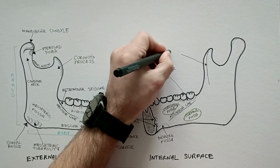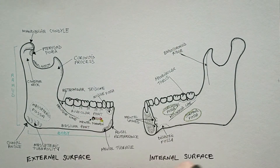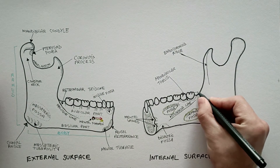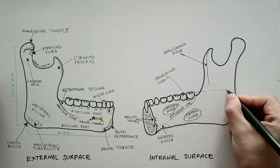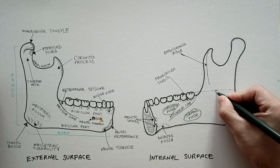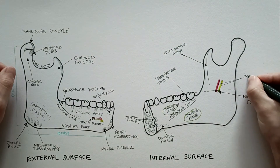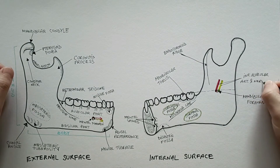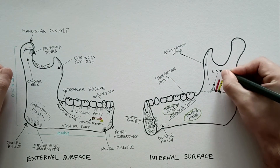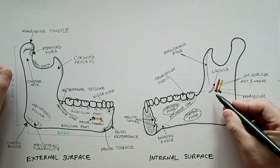The endocoronoid ridge is the vertical ridge extending inferiorly from the coronoid tip. Drawing an imaginary horizontal line on the inner surface of the ramus at the level of the occlusal surface of the last molar, at the midpoint of this line the mandibular foramen is located. The inferior alveolar artery and nerve pass through it to enter the mandibular canal. The lingula is a sharp projection at the edge of the mandibular foramen and serves as the attachment point for the sphenomandibular ligament.